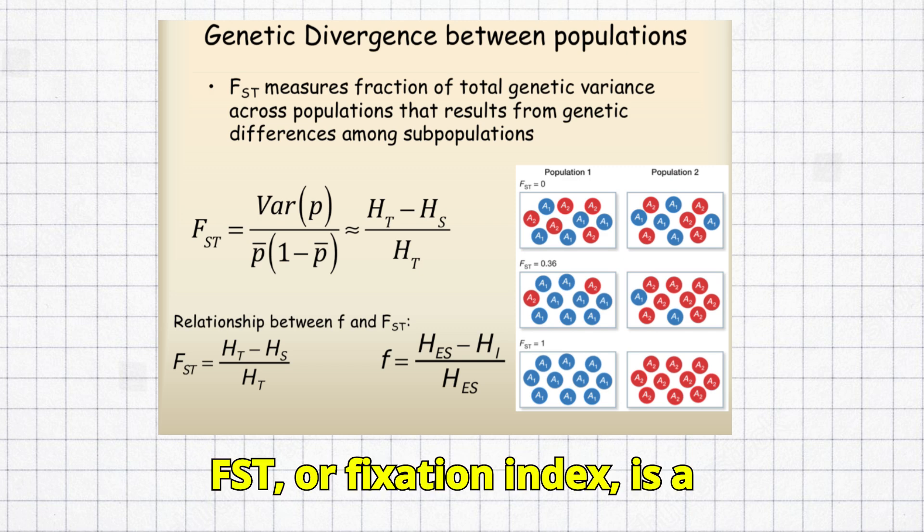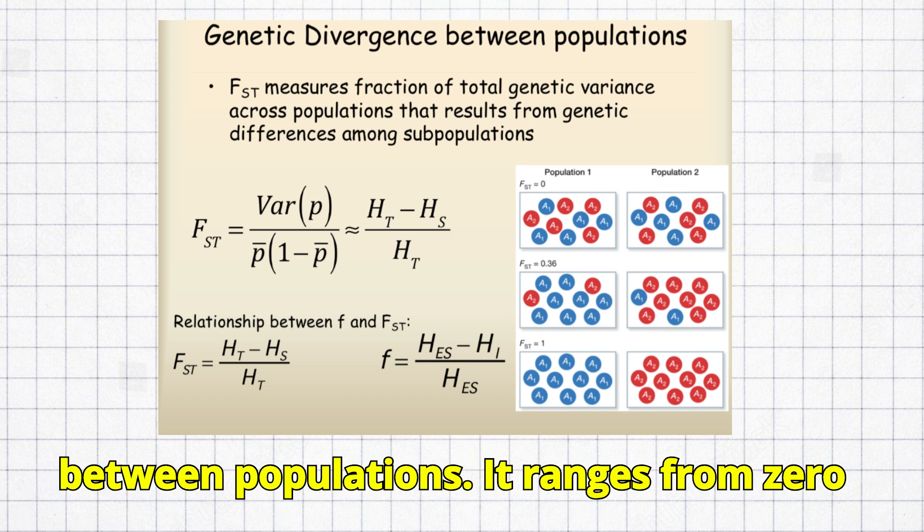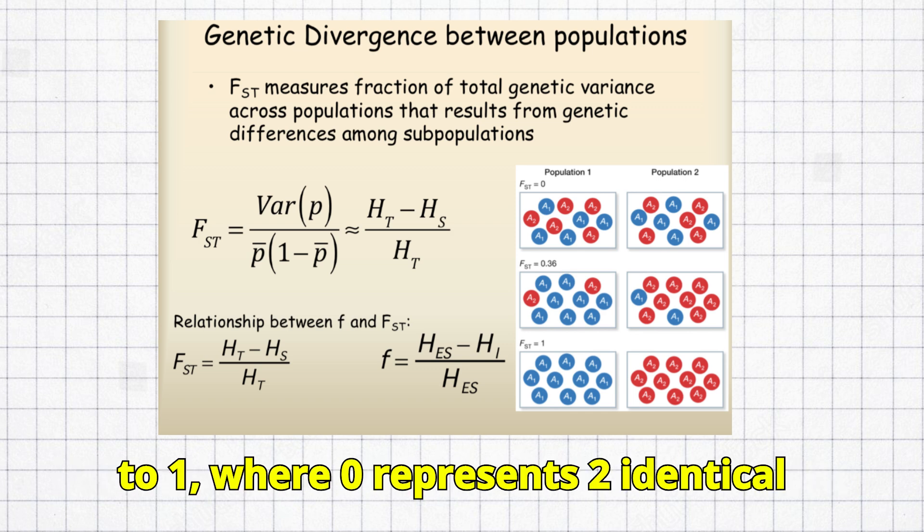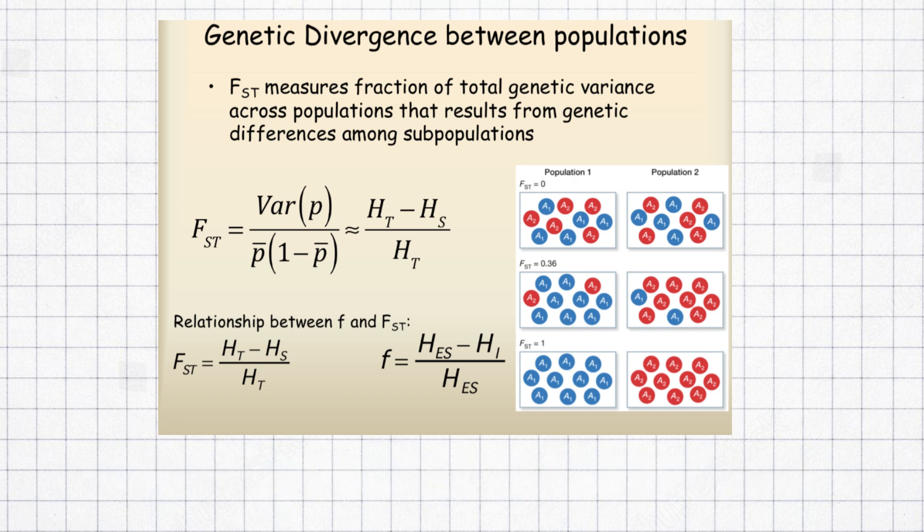FST, or fixation index, is a measure of genetic differentiation between populations. It ranges from 0 to 1, where 0 represents two identical populations, and 1 represents two populations that are completely unrelated.